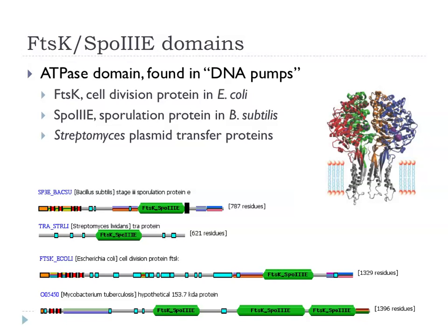The FTSK/SpoIIIE ATPase domains are found in DNA pumps. FTSK in E. coli is a cell division protein that pushes daughter chromosomes to the correct sides of the cell; SpoIIIE in Bacillus subtilis gets genome into the spore. Some Streptomyces plasmid transfer proteins also have these domains. It's thought to be a hexameric ATPase similar to those seen in type III secretion.